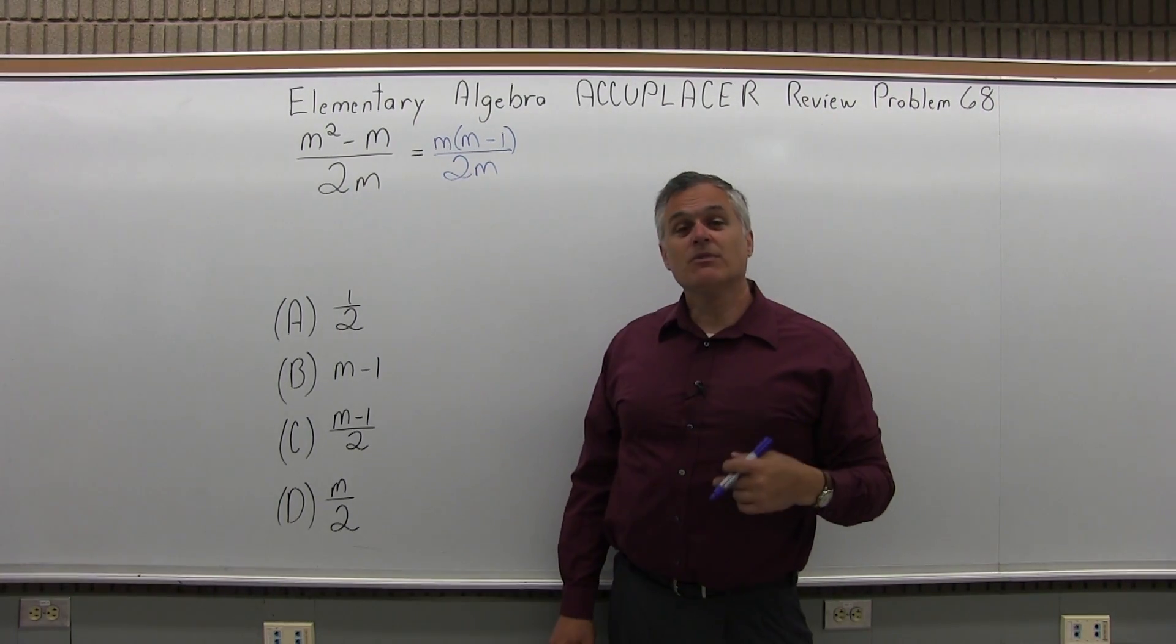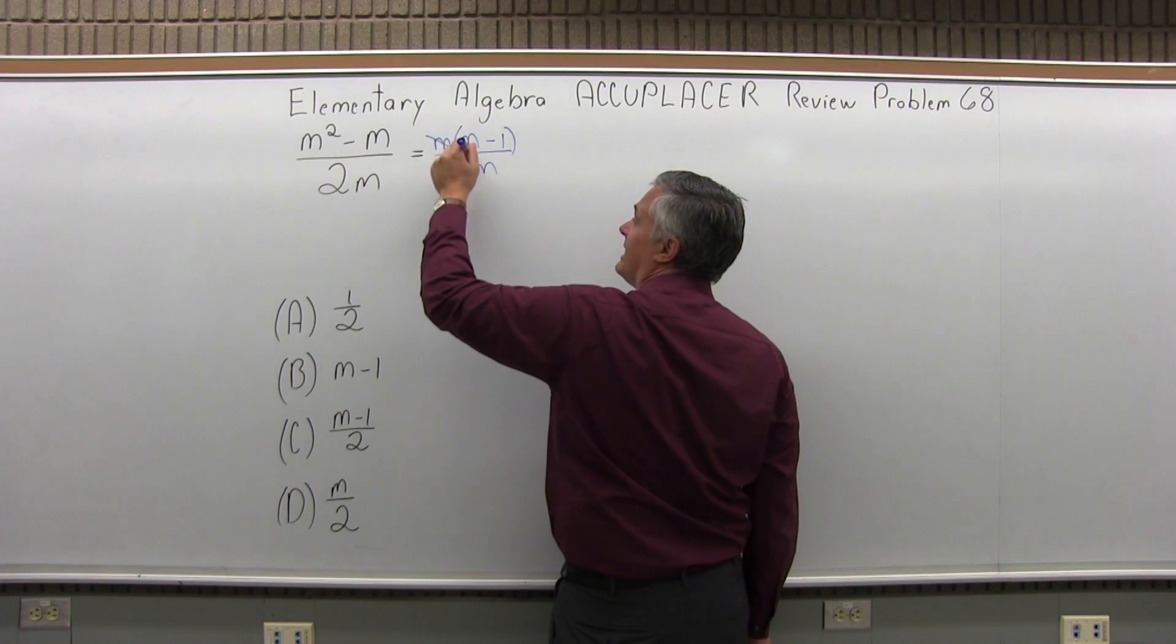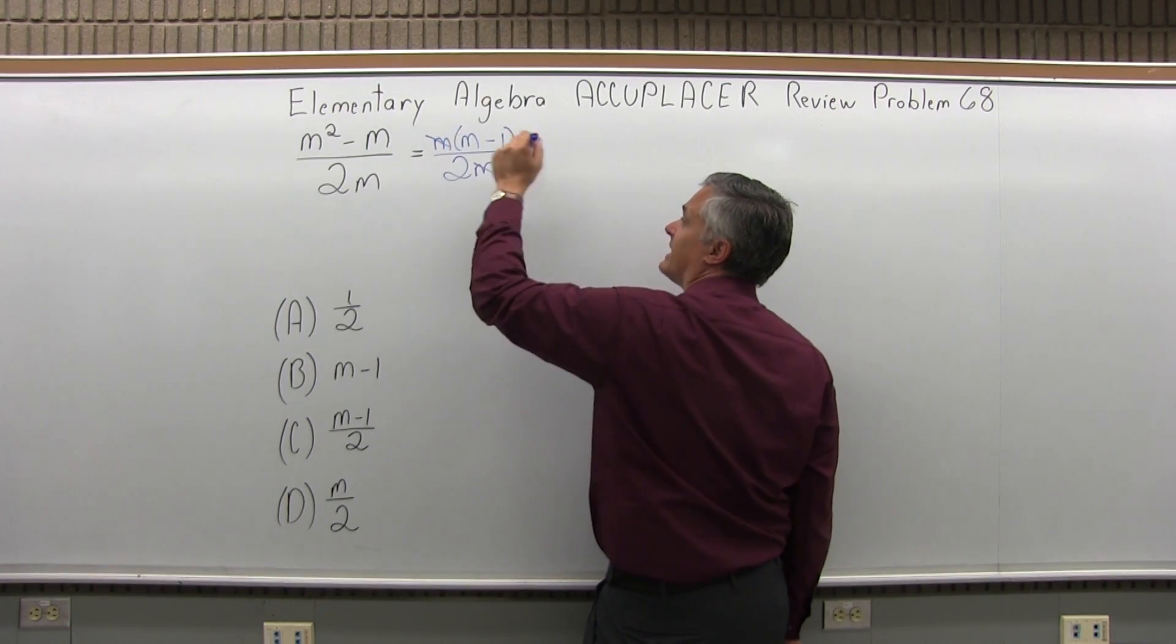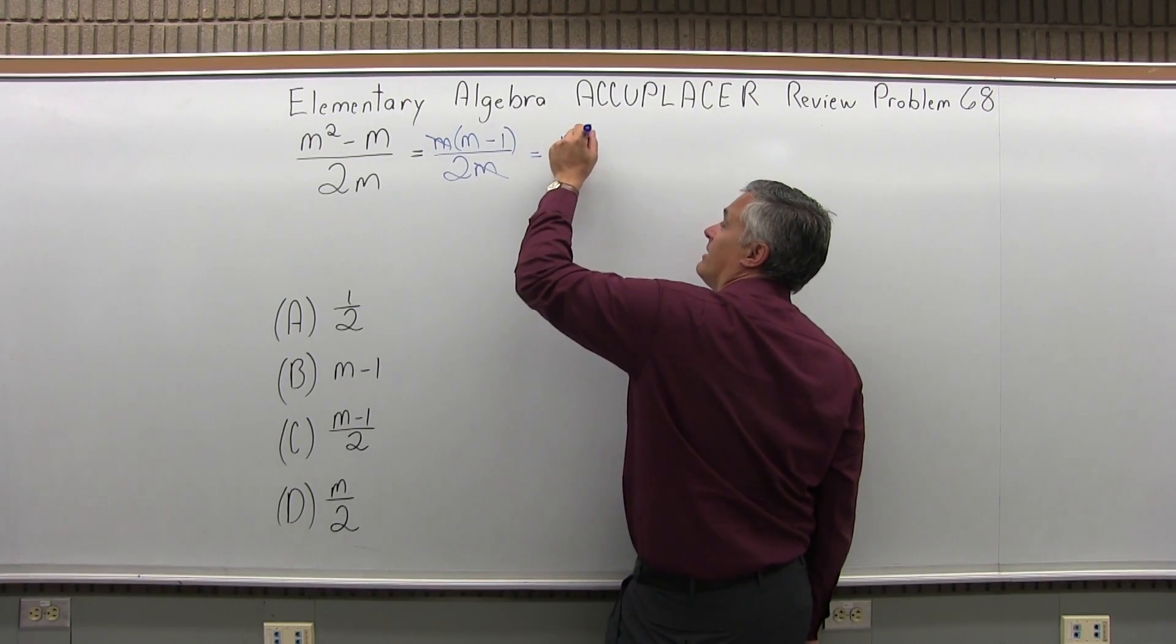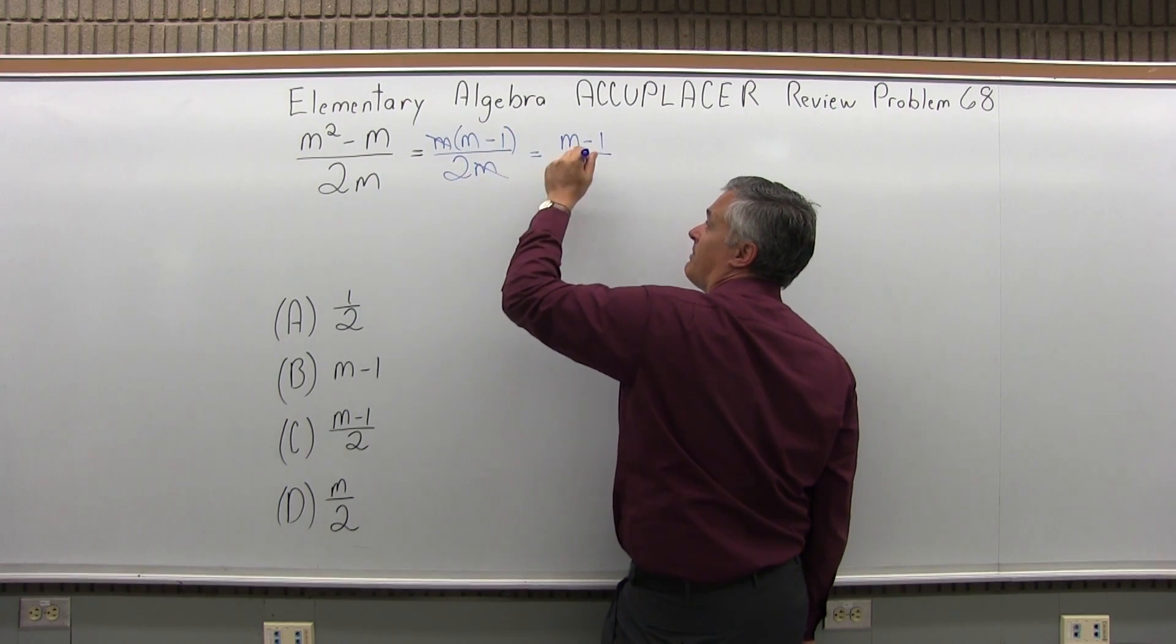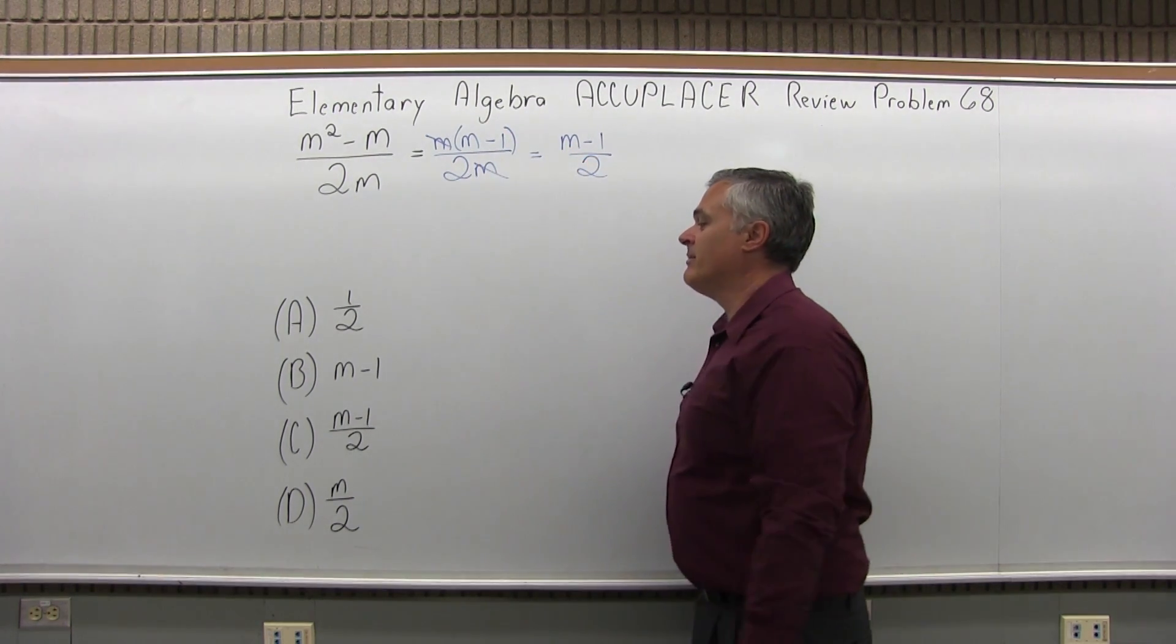And the denominator can stay 2m. But now that m that we factored out of the top can cancel with the m that was already in the bottom. And as I cancel those, I wind up with m minus 1 left in the top and 2 left in the bottom.